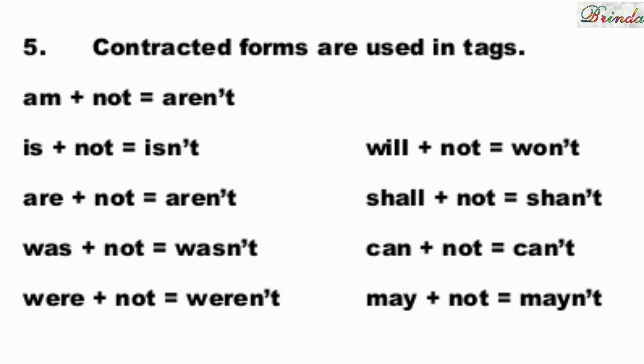Contracted forms are used in tags. Am plus not: ain't I or aren't I. Is plus not: isn't. Are plus not: aren't. Was plus not: wasn't. Were plus not: weren't. Will plus not: won't. Shall plus not: shan't. Can plus not: can't.